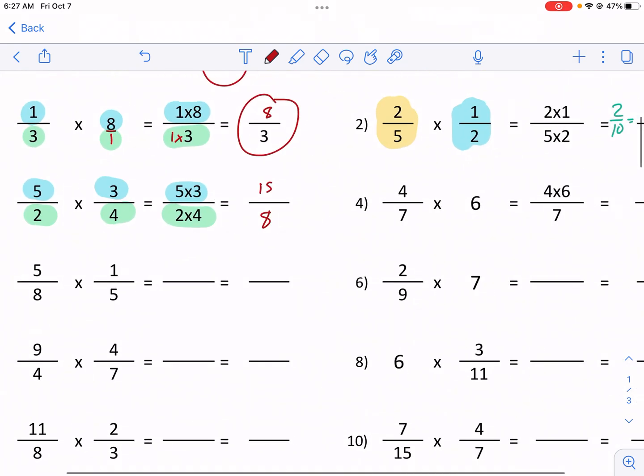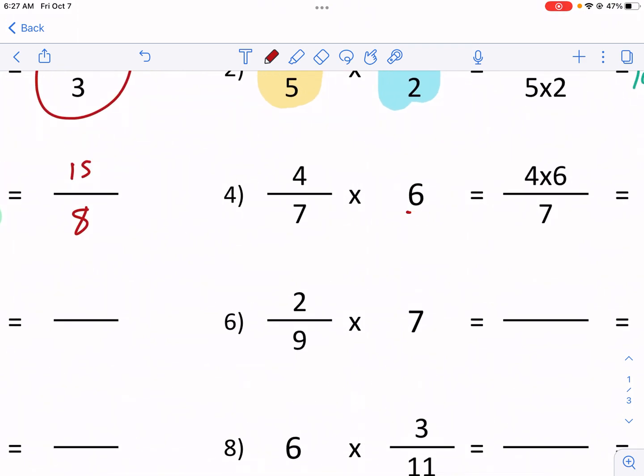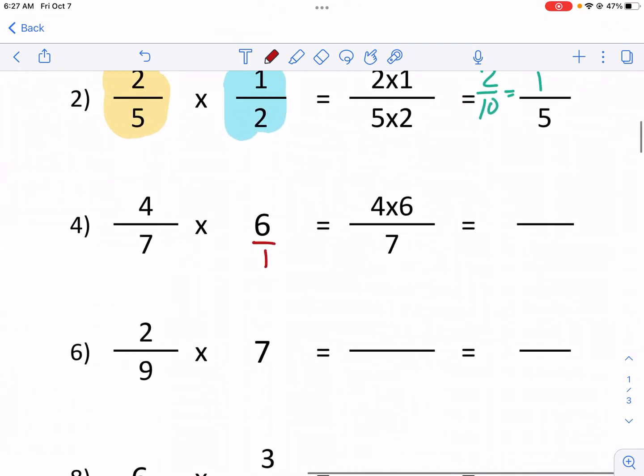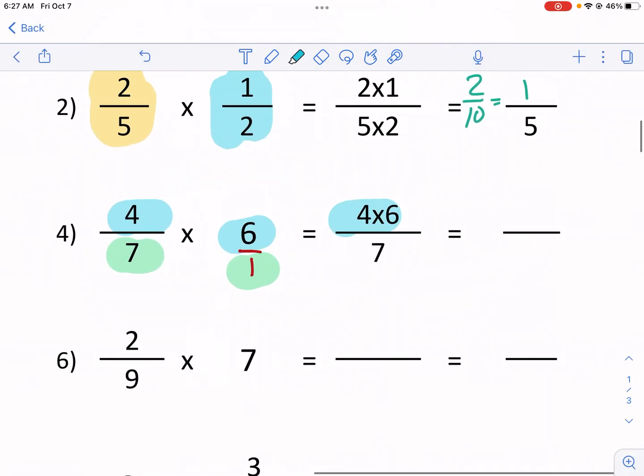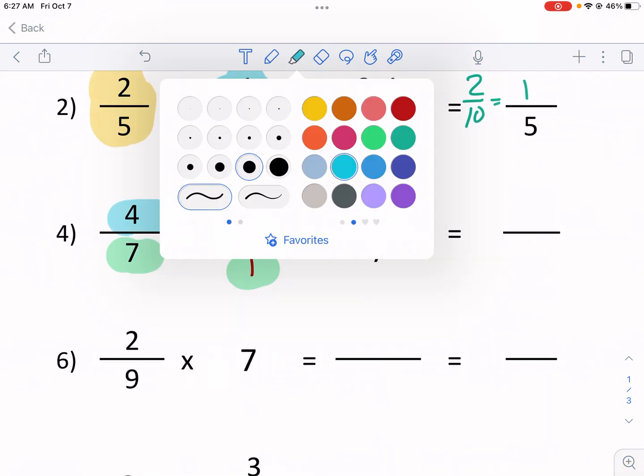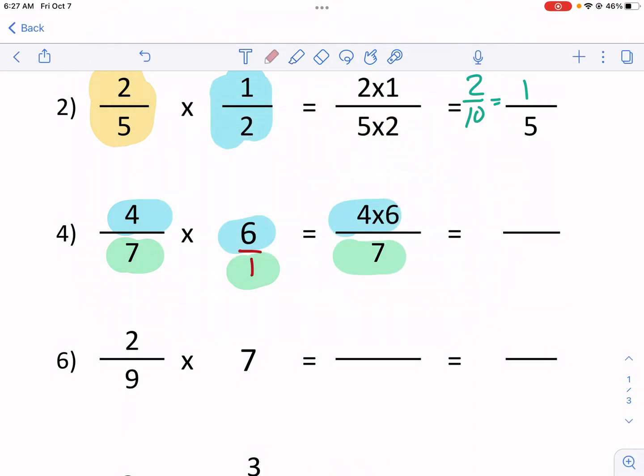Now another thing I would do is anytime you see a whole number, I would just go ahead and put this over one. So now we have top times top, bottom times bottom. Is green my bottom? Yes it is. So top times top, bottom times bottom, numerator times numerator, denominator times denominator.